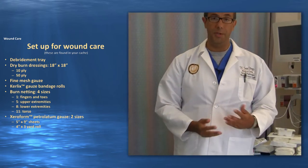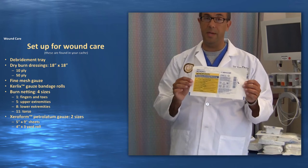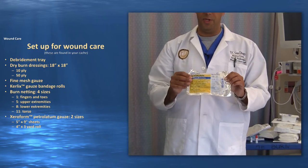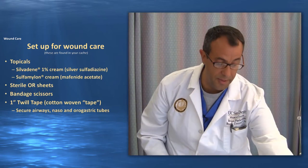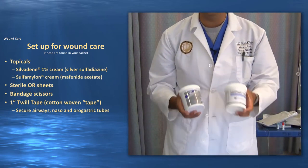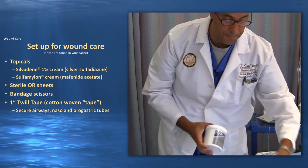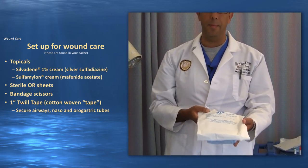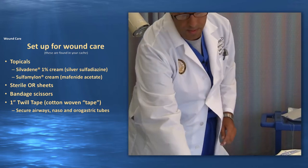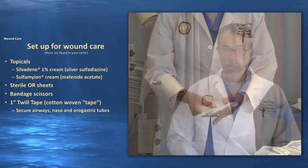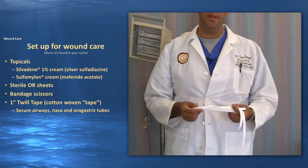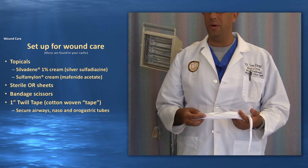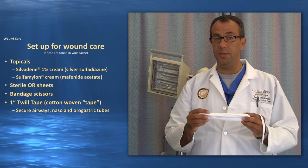We also have Xeroform in two different sizes — sheets of Xeroform that can be cut for smaller areas, and rolls of Xeroform that can be wrapped around extremities, the chest, trunk, and back. The main topicals you'll be using are Silvadene and Sulfamylon cream, both in 400-gram tubes. Blue OR towels are useful for cleaning, debriding, and wrapping wounds prior to dressing. You'll also find twill tape in your cache, which is used to secure airways and tubes when you're concerned about facial burns or swelling from fluid resuscitation — since we don't typically use commercial tape in those situations.